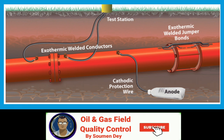What is the basic principle of cathodic protection? The principle is to connect an external anode to the metal to be protected and to pass a DC current between them so that the metal becomes cathodic and does not corrode. Here, two types of cathodic protection are shown: one with a magnesium anode, and another from a test station which supplies power, with cables connected via exothermic welded conductors.